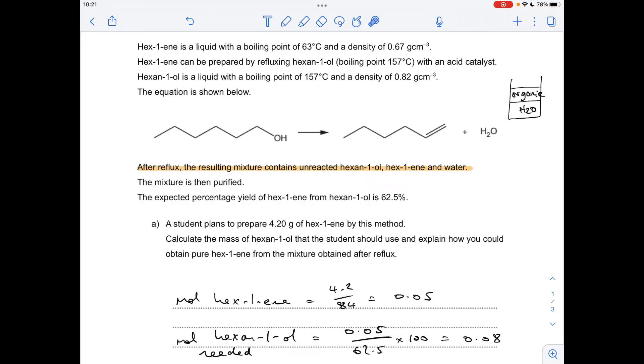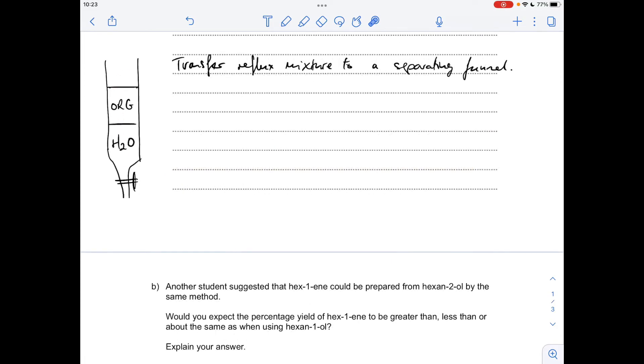So obviously the next thing we need to do is separate the organic layer from the aqueous layer, the water, and we use a separating funnel to do that. So there's my little sketch of the separating funnel, so you've got your water layer and then your two organic chemicals in this top layer. You'd wait for those to settle and then you would obviously get rid of this lower layer.